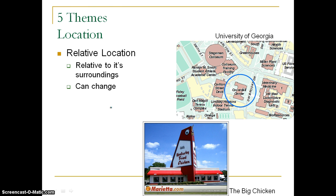That ends our conversation on absolute location. Now we move on to relative location. Absolute location describes precise mathematical points on the Earth's surface. Relative location is much more personal and has nothing to do with that — it has everything to do with the things surrounding the actual place or event you're trying to describe. Every place has one absolute location, which does not change; relative location is based upon its surroundings and can change over time.